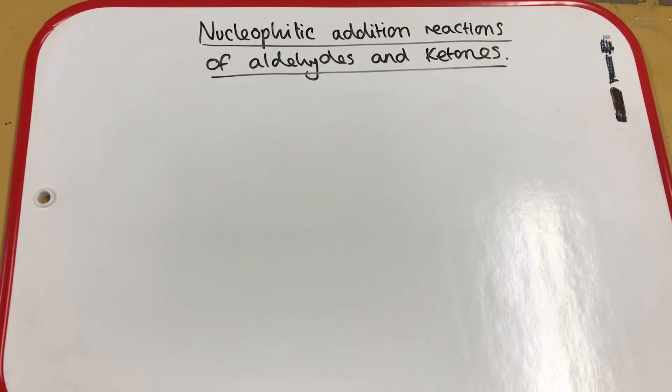Here we're going to look at the nucleophilic addition reactions of aldehydes and ketones. This is for the OCR A-level chemistry course. They are applicable to other syllabuses, but you may need to check to make sure that the mechanisms are the same. What you're going to be expected to do for OCR is to draw the mechanism, identify the reagents and identify the conditions for the reactions.